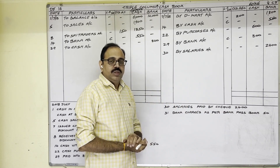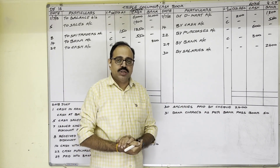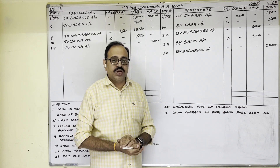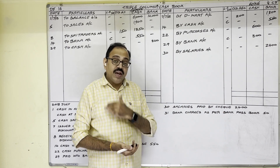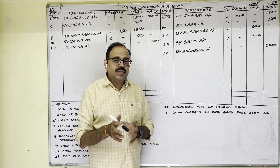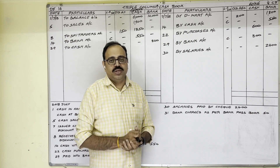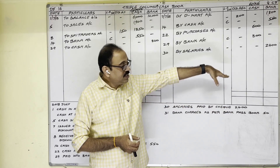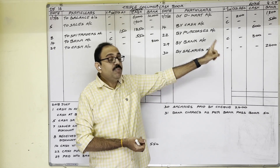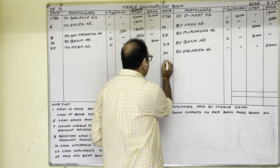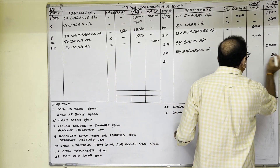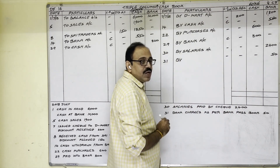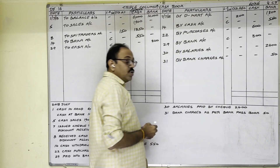31st date: bank charges 50 rupees. As per standing instructions, the banker pays insurance premium, rent, and other services from our account. They charge by deducting from our account. When they deduct 50 rupees, bank balance decreases — credit side bank column, 31st date, bank column 50 rupees. In particulars column write the expenditure name: 'By Bank Charges Account'. All transactions are now posted.